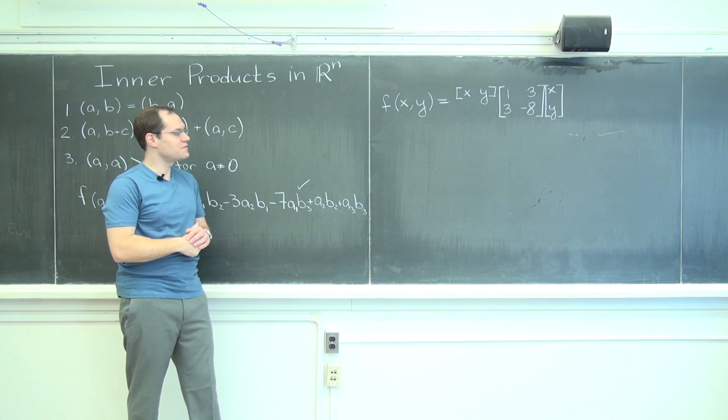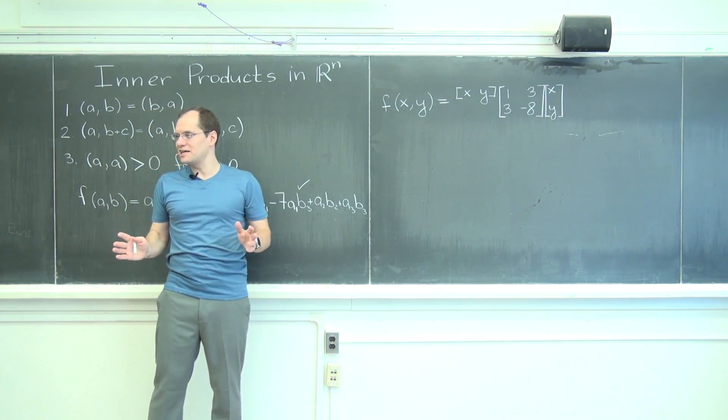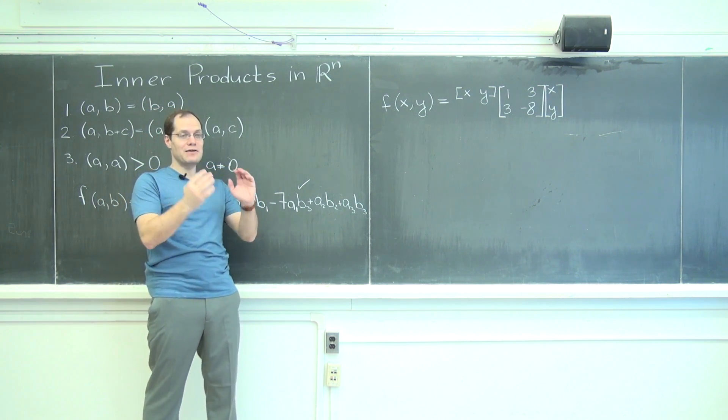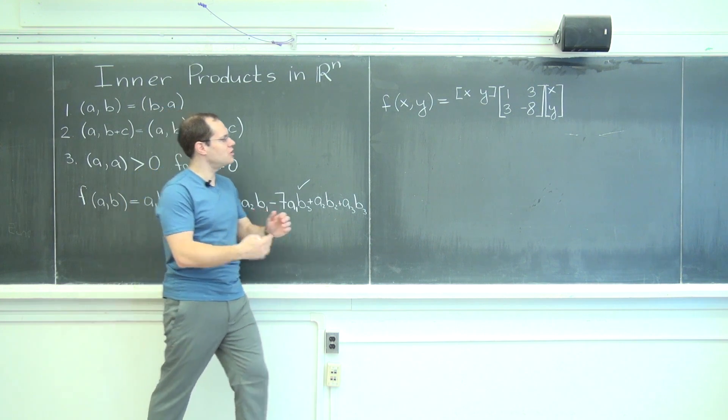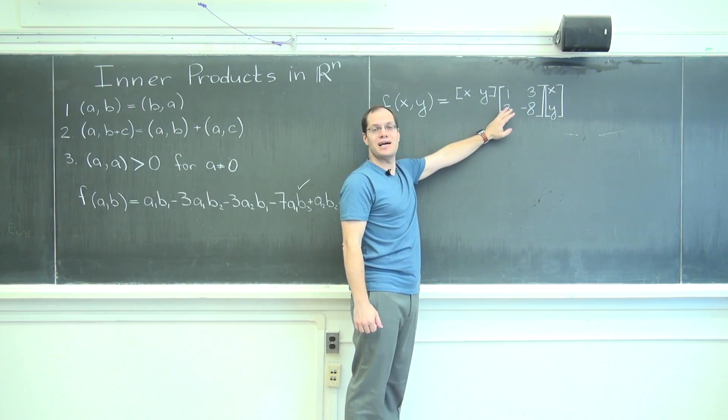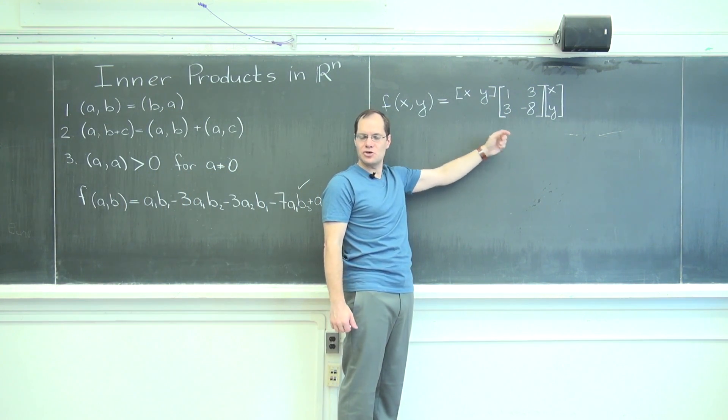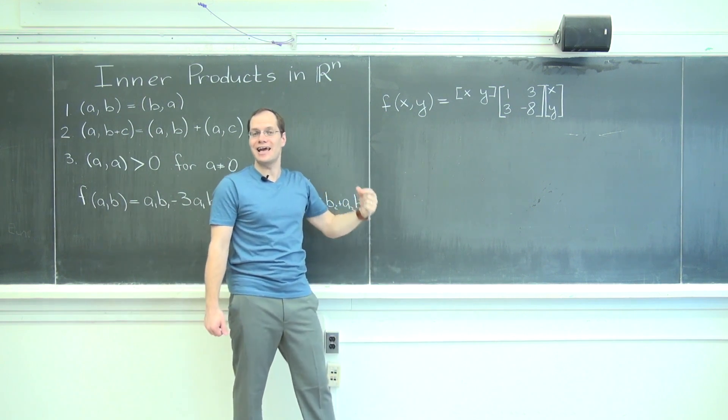We'll start by talking about this function, and I've changed my notation a little bit. Since we now have only one vector, I'm calling it entries x, y, z if we go to three dimensions. So we're dealing with only one vector a.